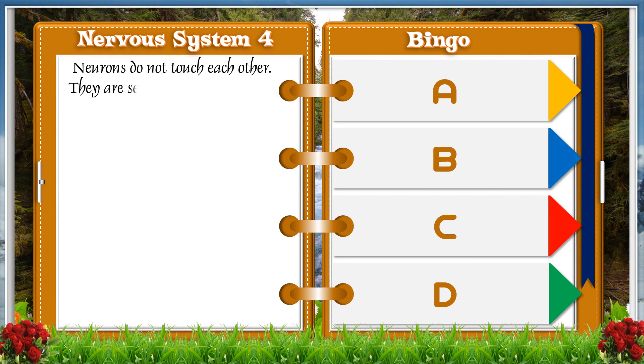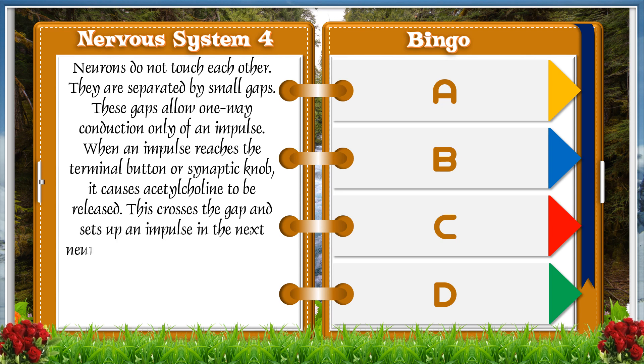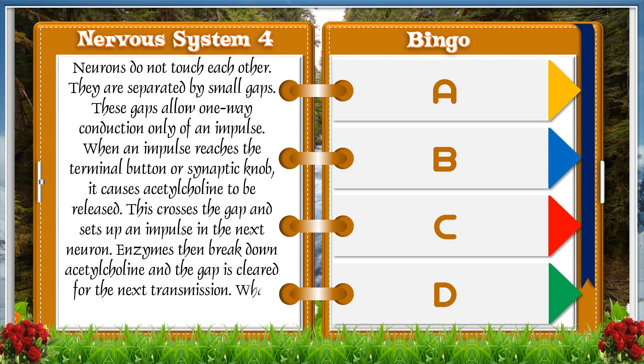Neurons do not touch each other. They are separated by a small gap. These gaps allow one-way conduction only of an impulse. When an impulse reaches the terminal button or synaptic knob, it causes acetylcholine to be released. This crosses the gap and sets up an impulse in the next neuron. Enzymes then break down acetylcholine and the gap is cleared for the next transmission.